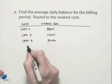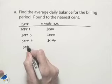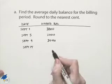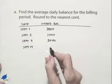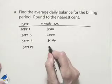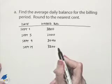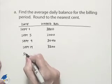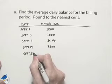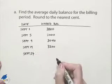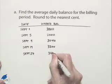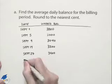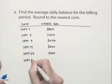On September 19th, we have another charge of $160, giving us a total of $3,200. On September 27th, we have another charge of $200, bringing the balance to $3,400. And then of course we end the month on September 30th.